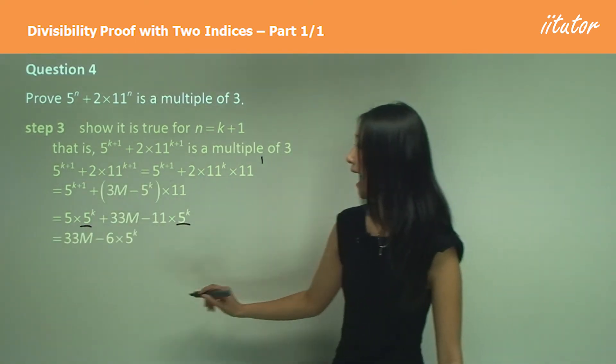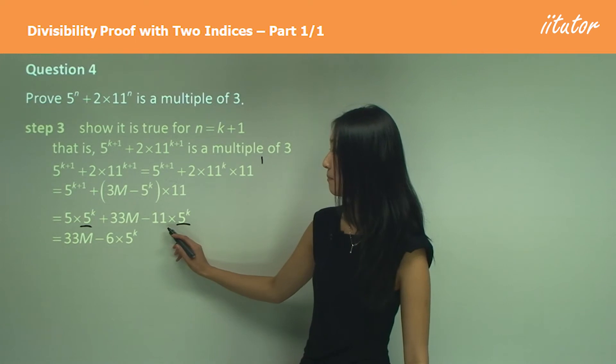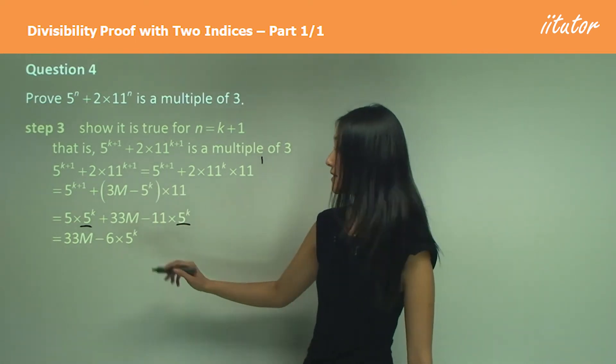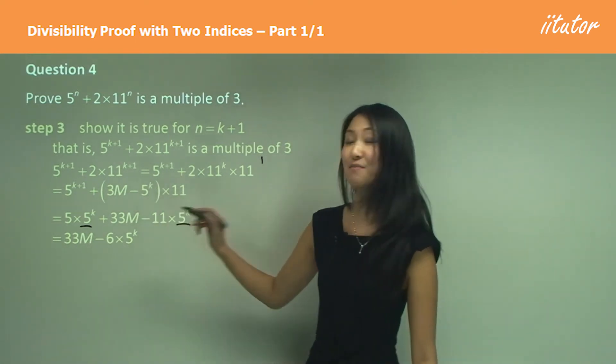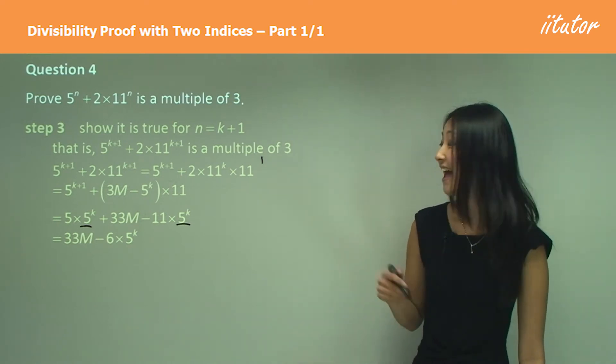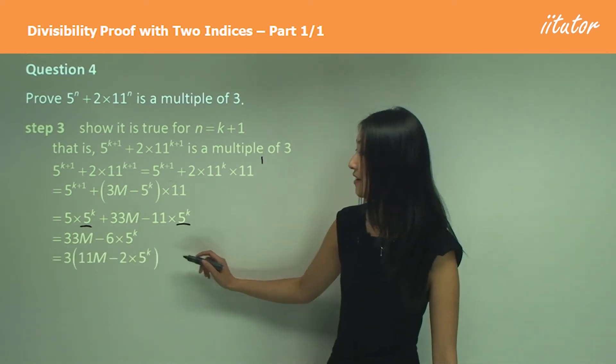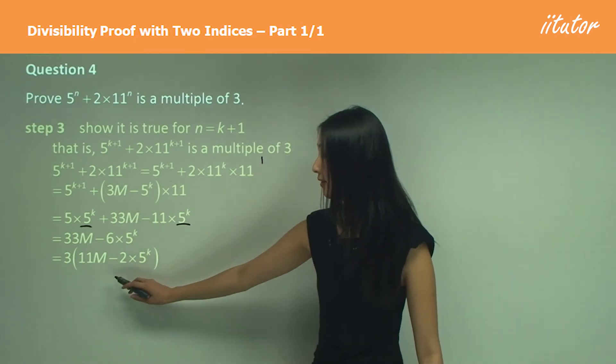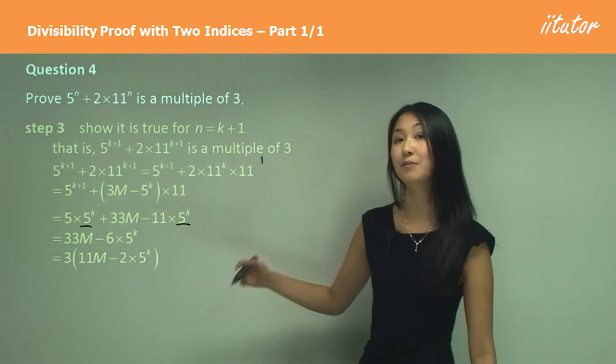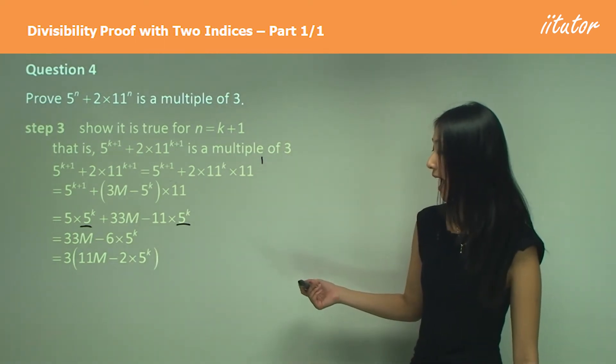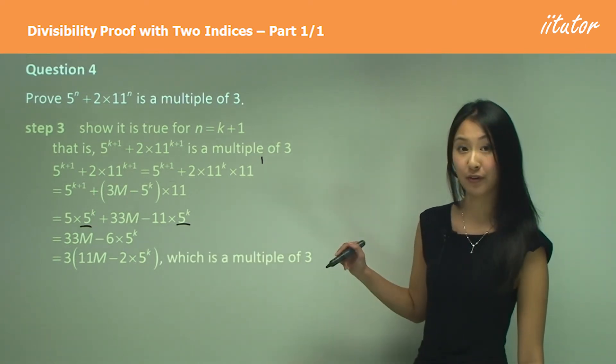Now we have 33m minus 11 plus 5, which gives you minus 6 times 5^k. Now you can see we can factorize out the 3, and that gives us 11m minus 2 times 5^k, which is a multiple of 3.